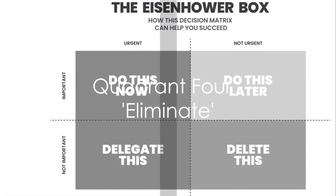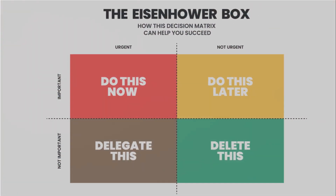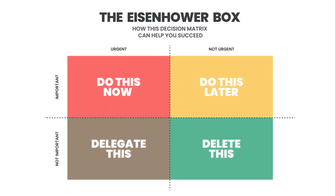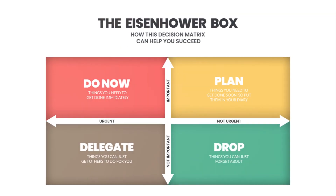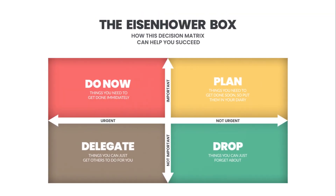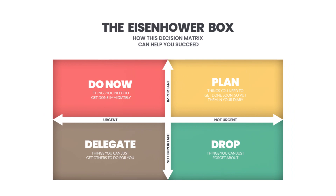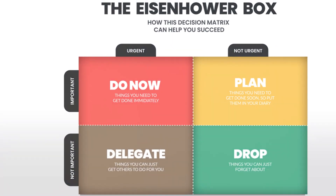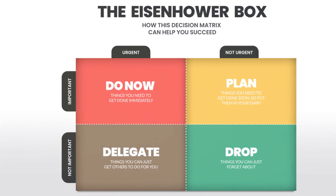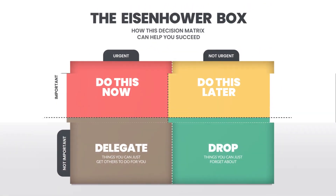Quadrant 4, the Eliminate Quadrant, contains tasks that are neither urgent nor important. These are tasks that should be minimized or eliminated altogether. Examples might include excessive social media browsing or unproductive meetings.